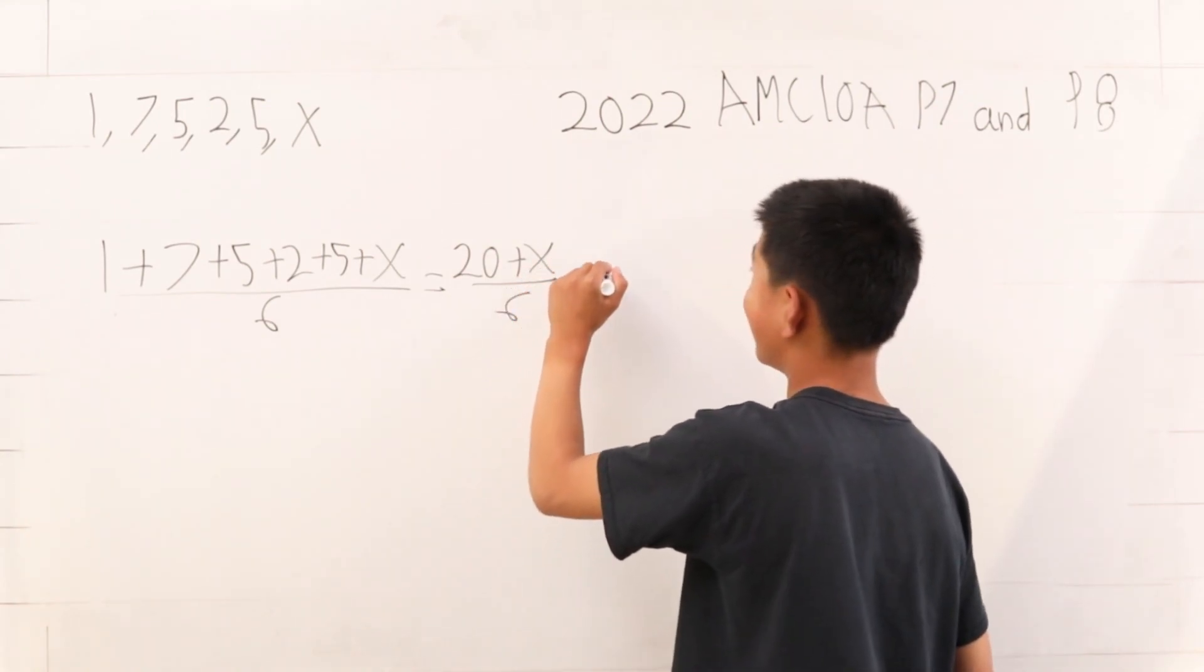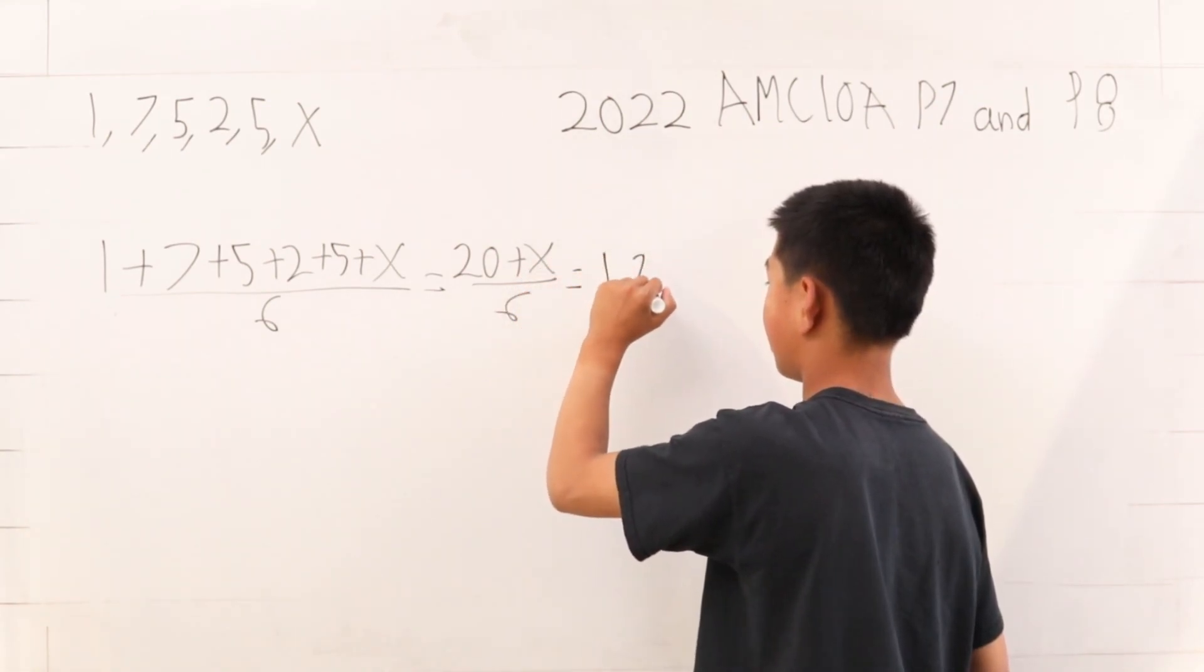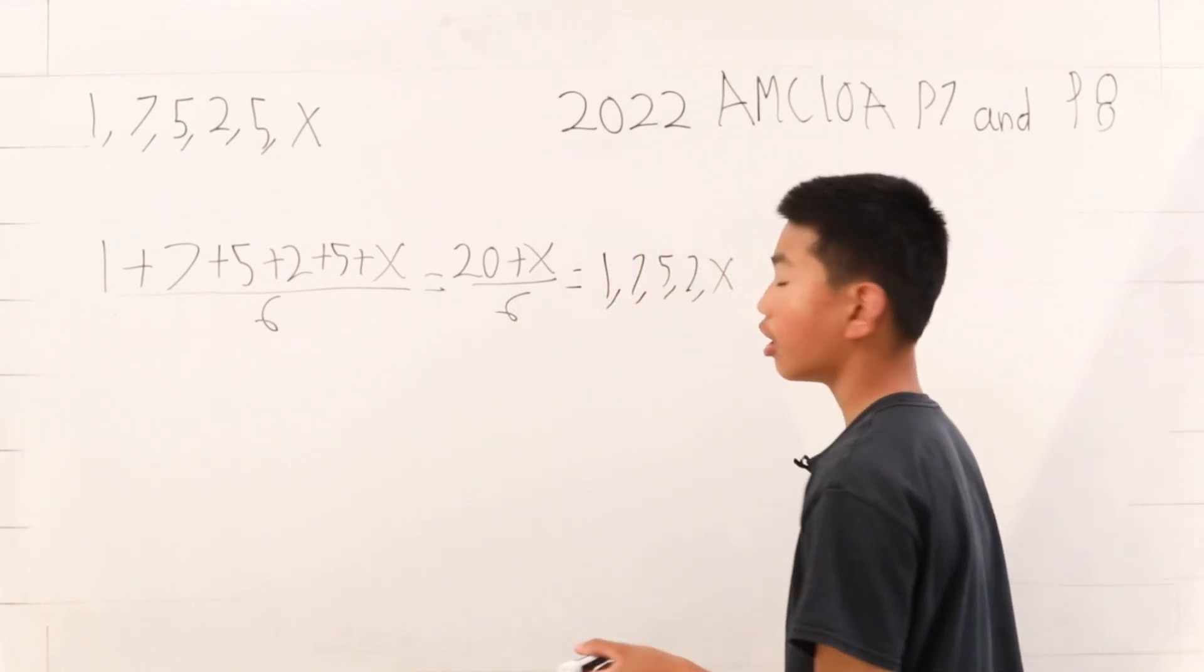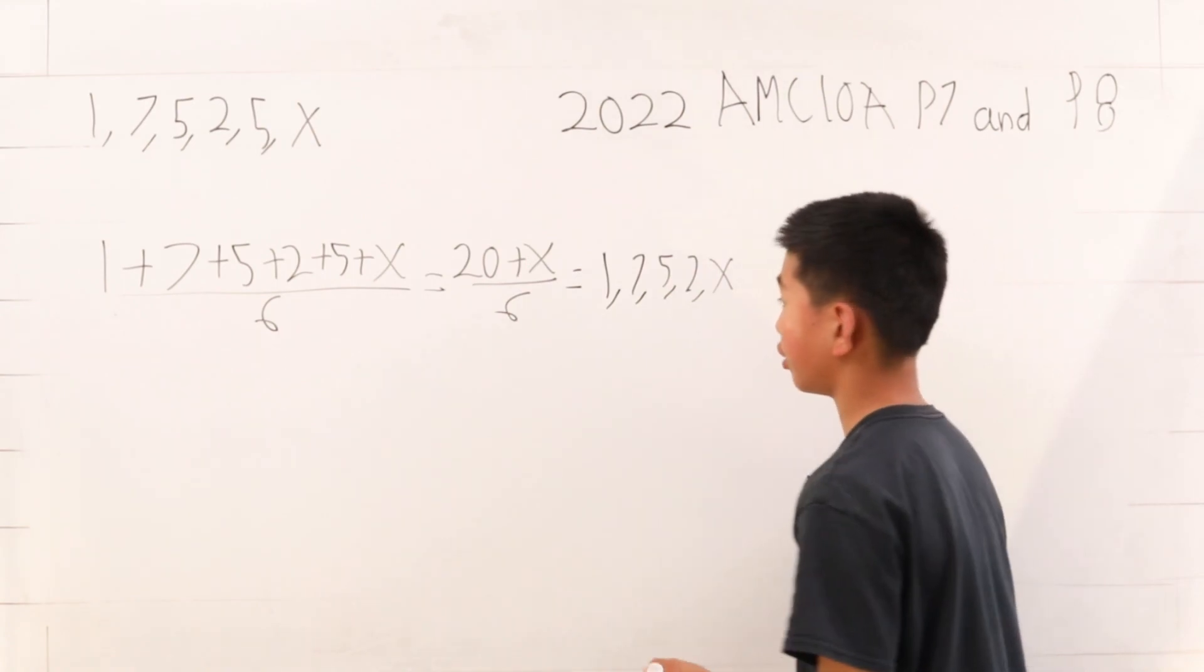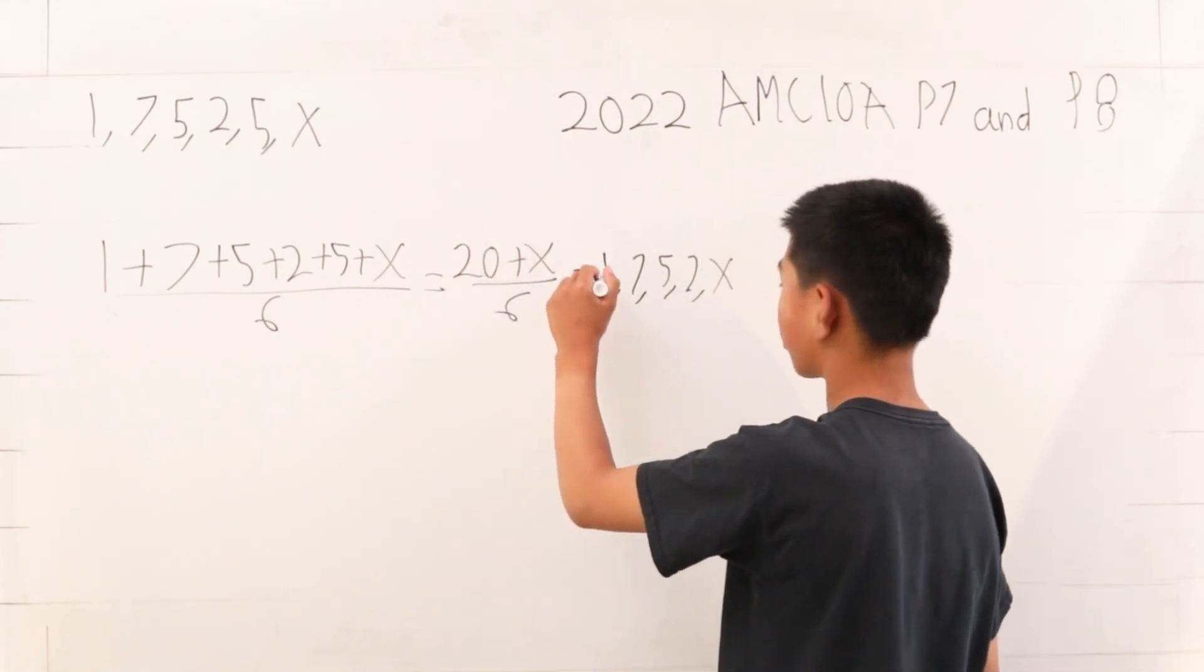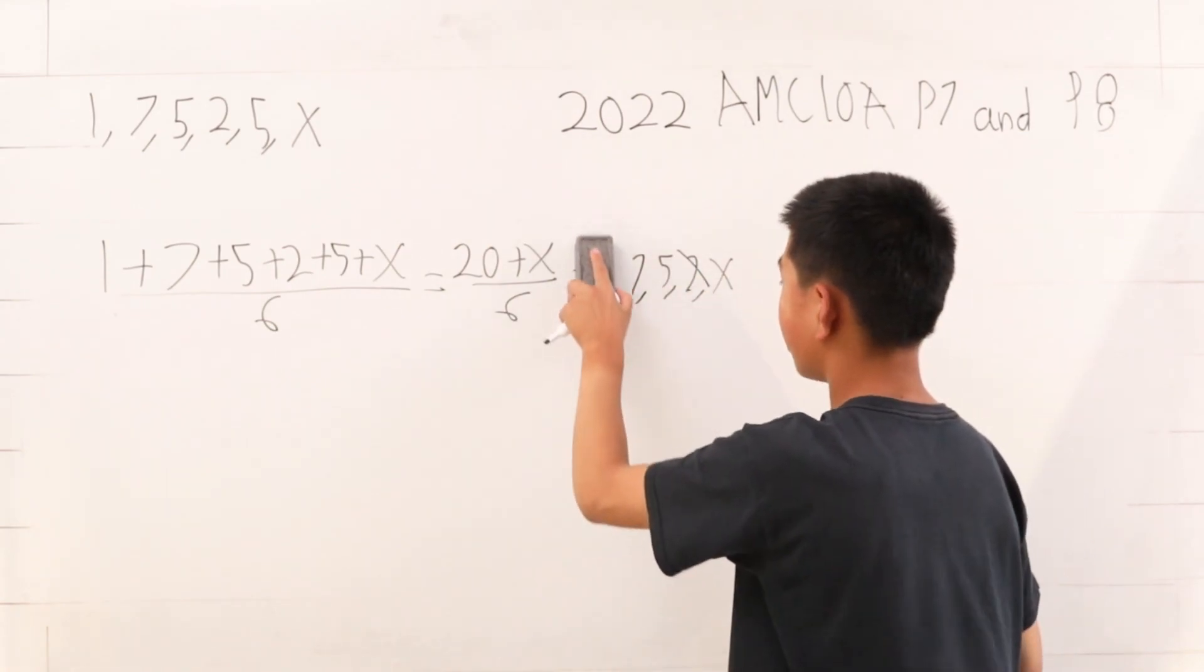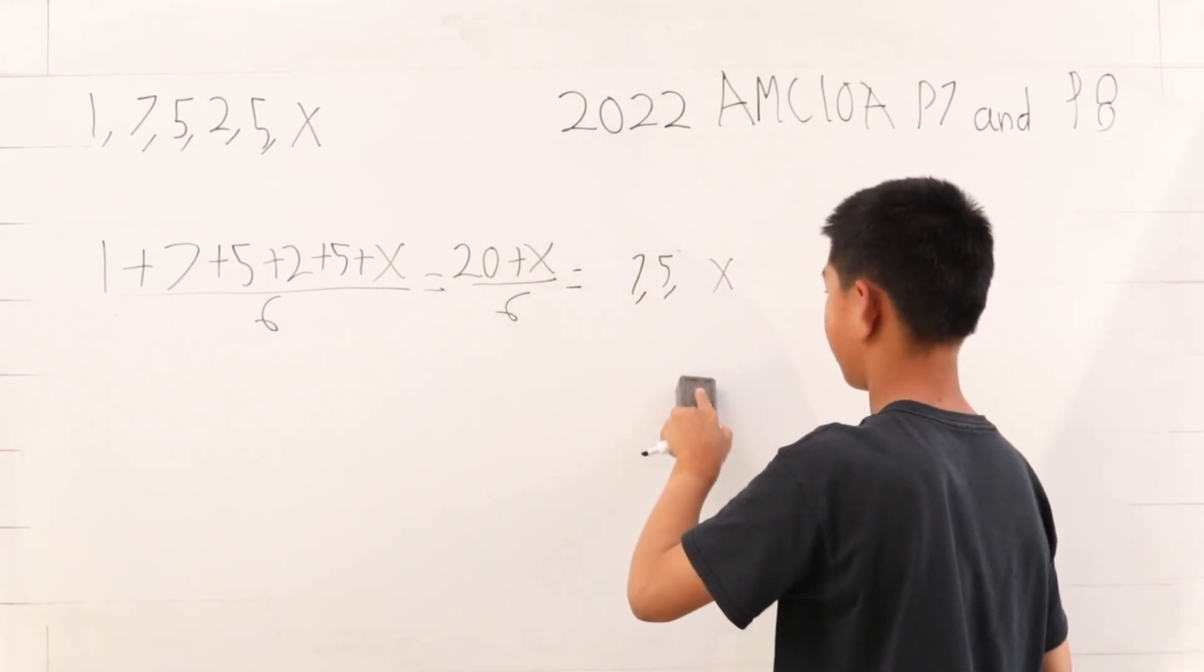I'll just write them out here. It has to be either 1, 7, 5, 2, or x. Now, we immediately see that even if x was equal to 0, 20 over 6 is still greater than 1 or 2. So we have three possible cases here.